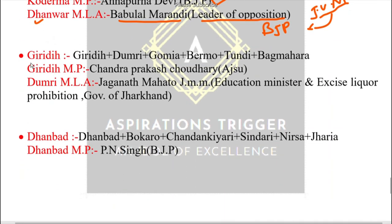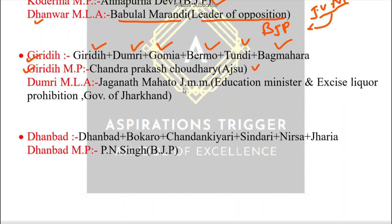Now let me talk about Giridih Parliamentary Constituency. Giridih Parliamentary Constituency consists of: Giridih, Dumri, Gomia, Bermo, Tundi, and Baghmara assembly constituencies. The Member of Parliament from Giridih is Chandprakash Chaudhary.